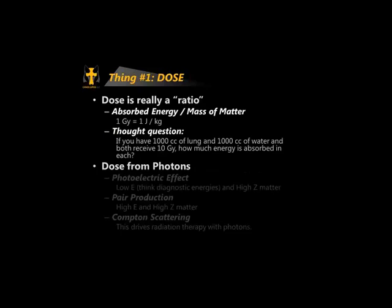A quick review of dose: it's a ratio of absorbed energy per unit mass, so the unit of gray is a joule per kilogram. Quick thought question: if you have 1,000 cubic centimeters of lung and 1,000 cubic centimeters of water, and both receive 10 gray, how much energy is absorbed in each? A lot of you may think they both get 10 gray so they absorb equal energy. But no — lung absorbs about a third of the energy of water because it is less dense. There's less mass there.